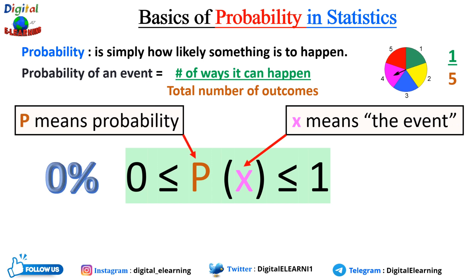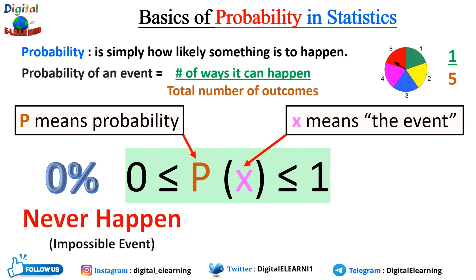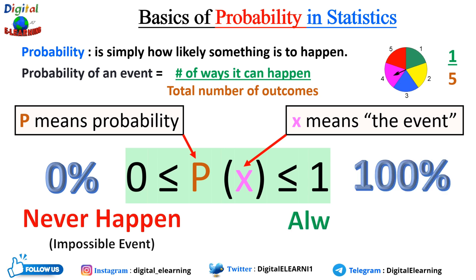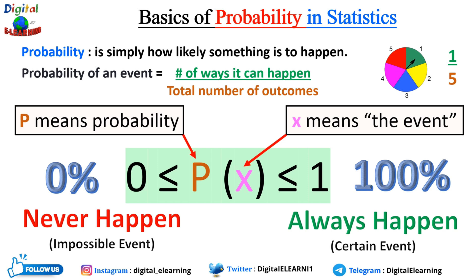Probability ranges from zero to one, where P denotes the probability and x denotes an event. Zero percent probability means it is an impossible event — it will never happen, the event has zero chance of occurring. If it is 100 percent, it is a certain event and will always happen. The probability will never exceed one and will never go below zero.